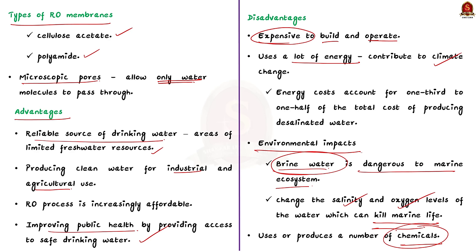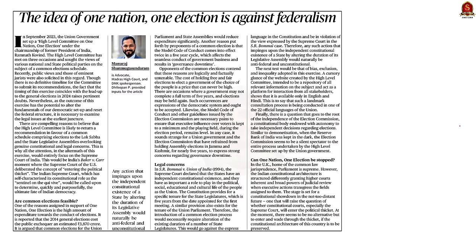Overall, desalination is a valuable tool for providing access to drinking water and it helps to achieve Sustainable Development Goal 6, which is ensuring access to water and sanitation for all. Now let us move to the next topic.